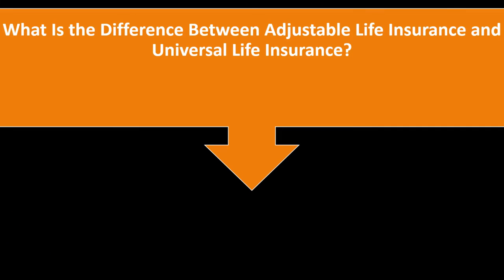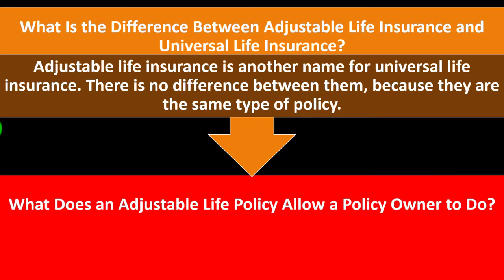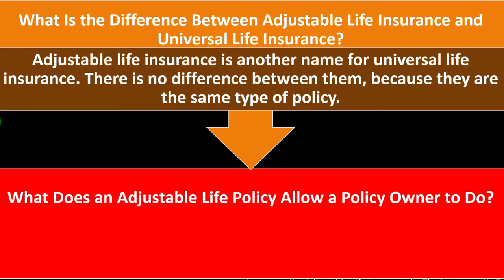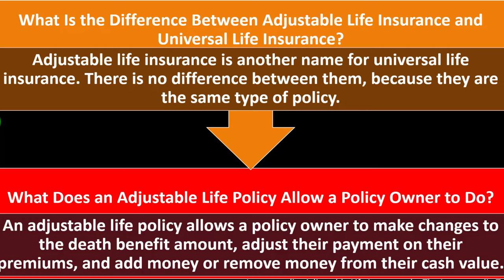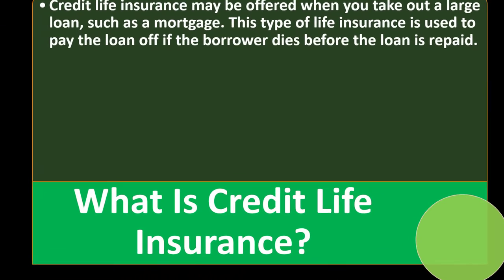What is the difference between adjustable life insurance and universal life insurance? Adjustable life insurance is another name for universal life insurance — there is no difference between them because they are the same type of policy. An adjustable life policy allows a policy owner to make changes to the death benefit amount, adjust their premium payments, and add or remove money from the cash value.